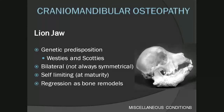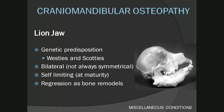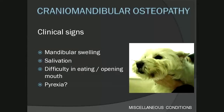The last condition is cranio-mandibular osteopathy — CMO, also known as lion jaw. This condition has a genetic predisposition in Scotties and Westies. It can occur bilaterally but not always symmetrically, affecting the mandibles, and can extend caudally to affect the temporomandibular joints, the tympanic bulla, and even the petrous temporal bone. It is self-limiting once the dog reaches skeletal maturity and can regress as the bone remodels. Clinical signs include mandibular swelling, salivation, difficulty eating and opening the mouth — especially with TMJ involvement — and there may also be pyrexia.